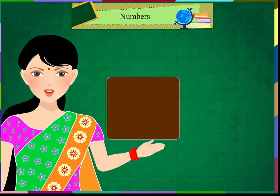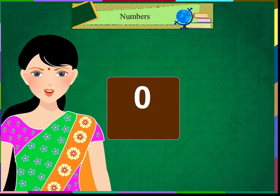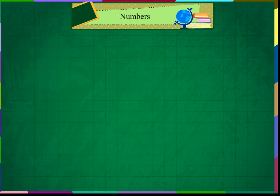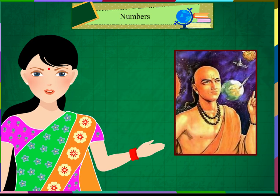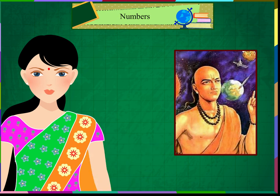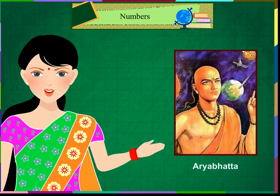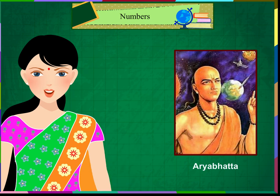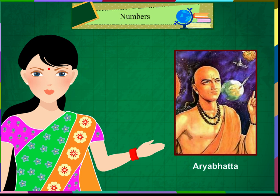We write zero as zero. He is a great mathematician. His name is Aryabhata. He invented zero as well as discovered many things in maths.